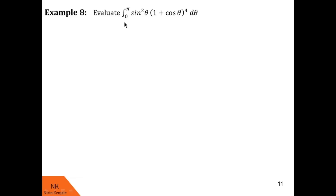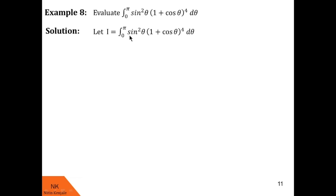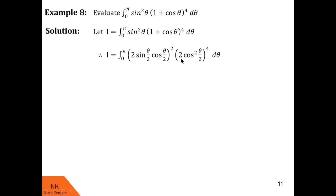In the next example, we evaluate the integral of sin²θ · (1 + cosθ)⁴ dθ over the limit 0 to π. We label it as I and simplify using trigonometric identities: sin²θ is written as (2 sin(θ/2) cos(θ/2))², and 1 + cosθ as 2cos²(θ/2). Taking out constant terms — 2² · 2⁴ = 2⁶ — we get the integral of sin²(θ/2) · cos²(θ/2) · cos⁸(θ/2), i.e., cos^10(θ/2) · sin²(θ/2) dθ.